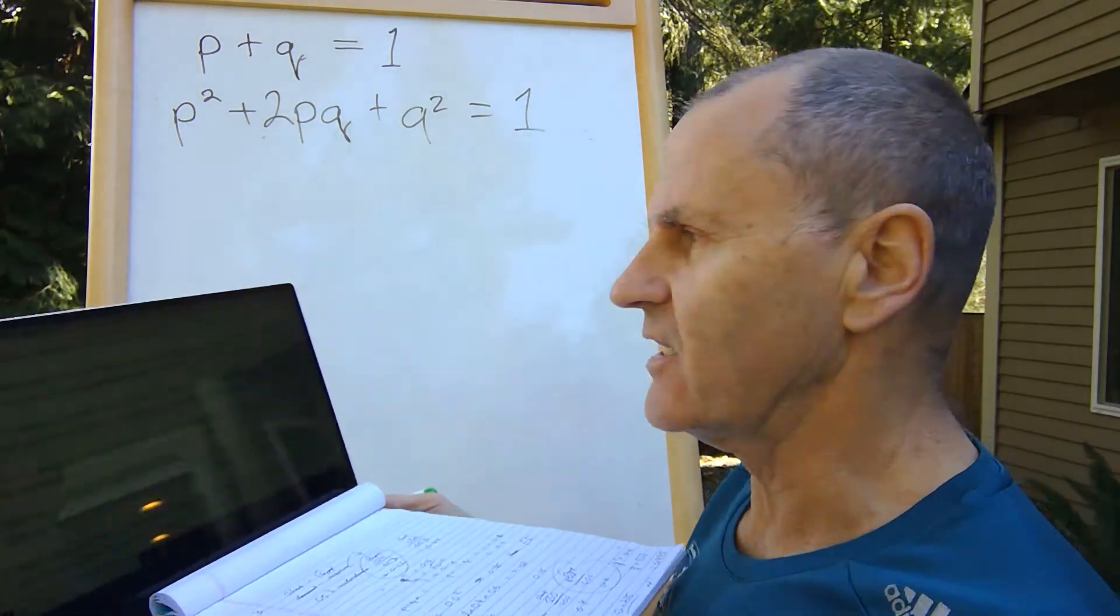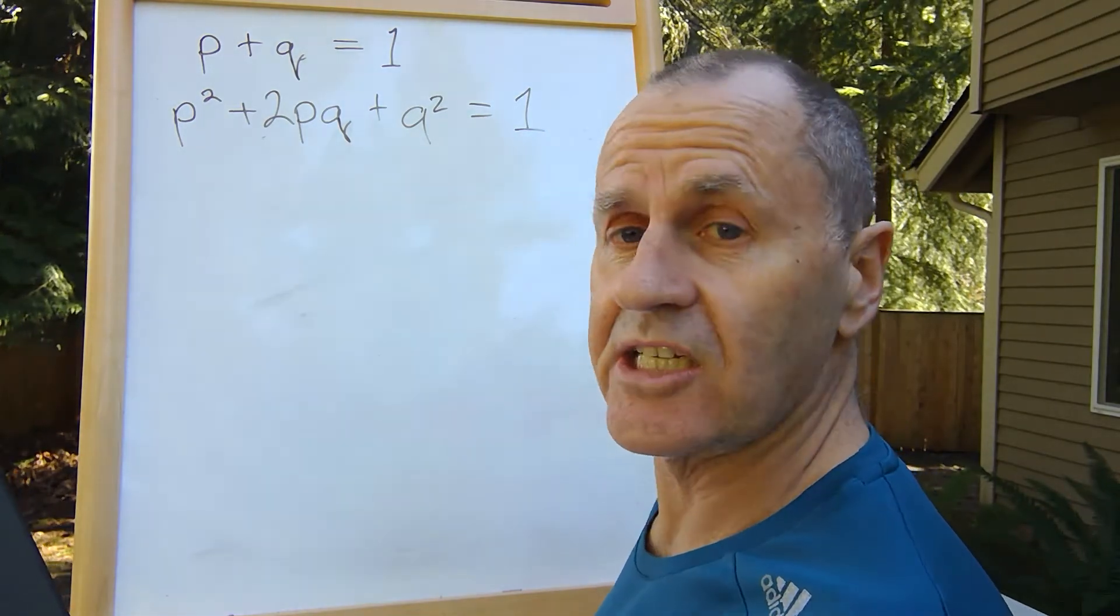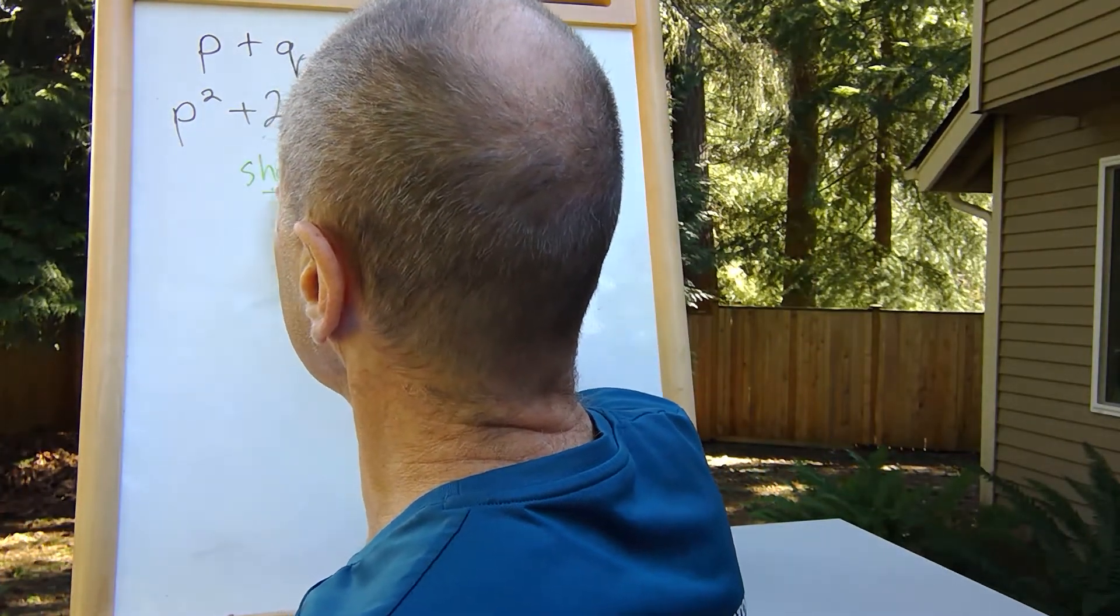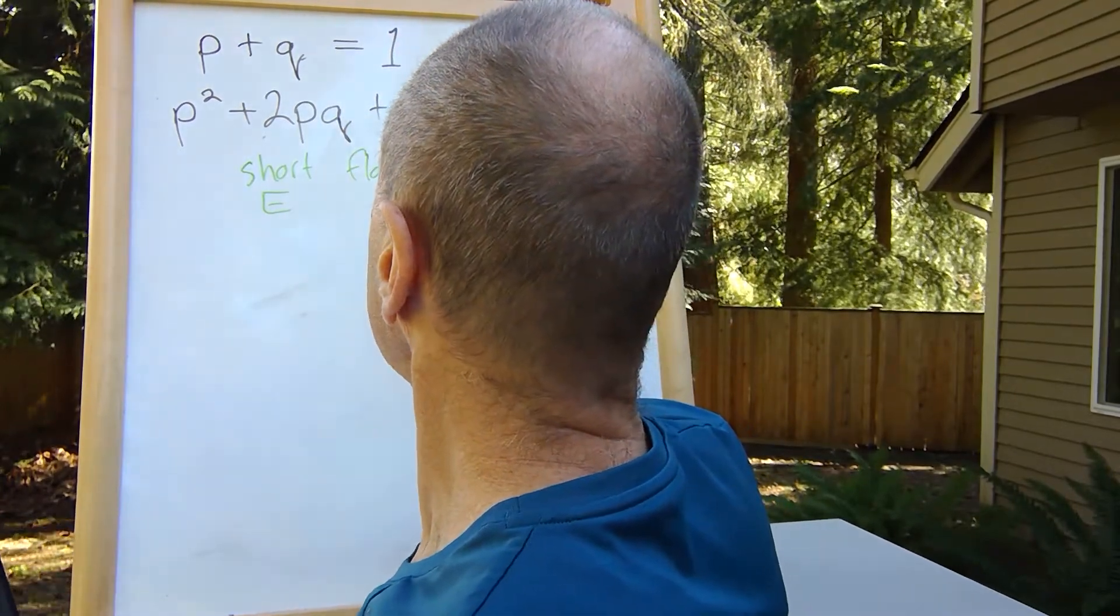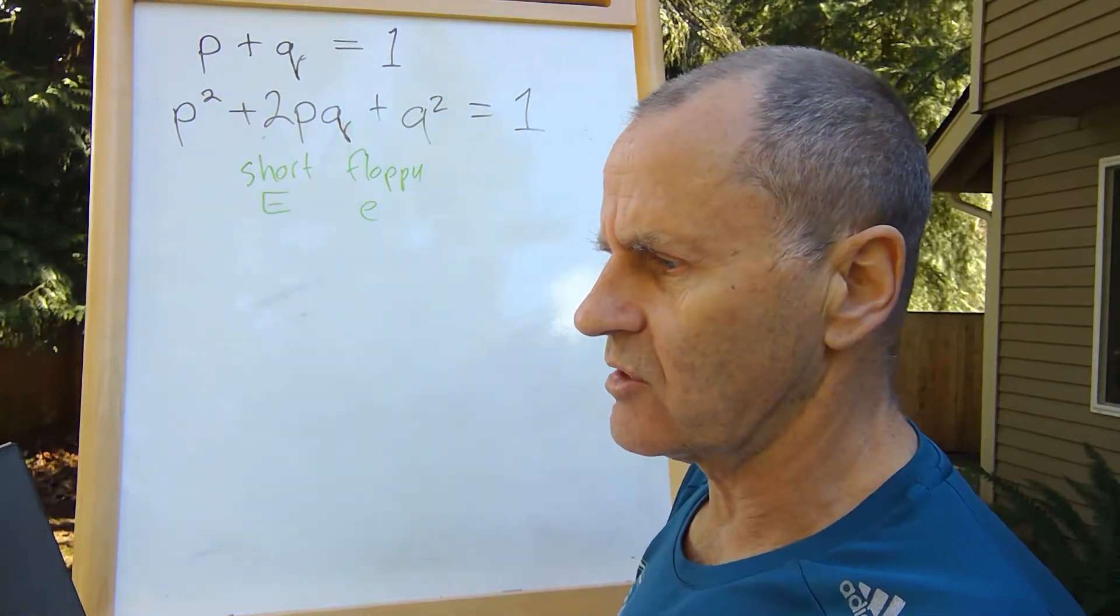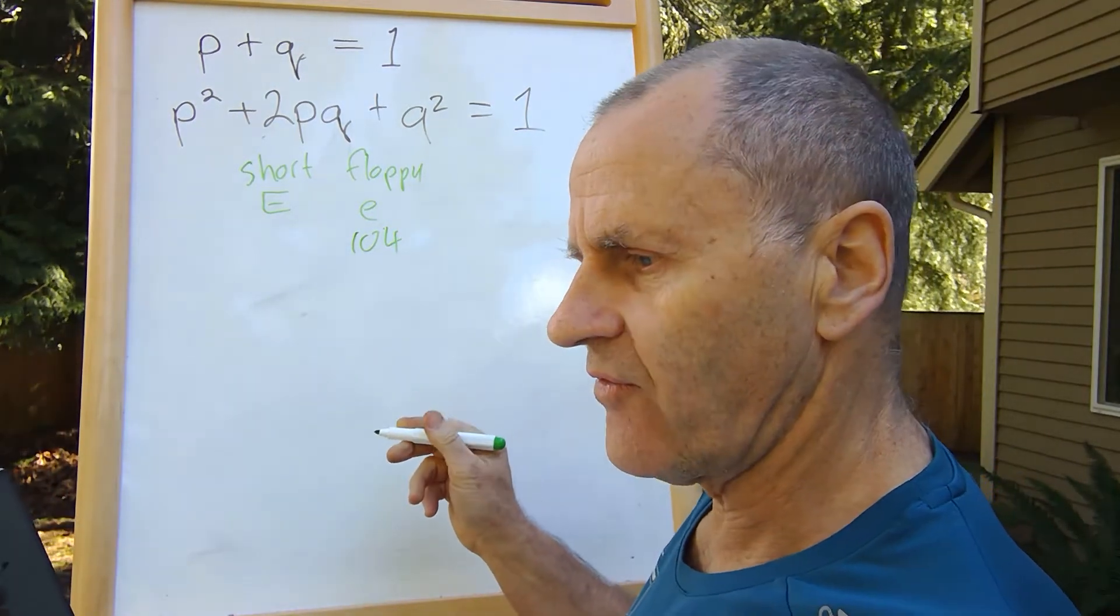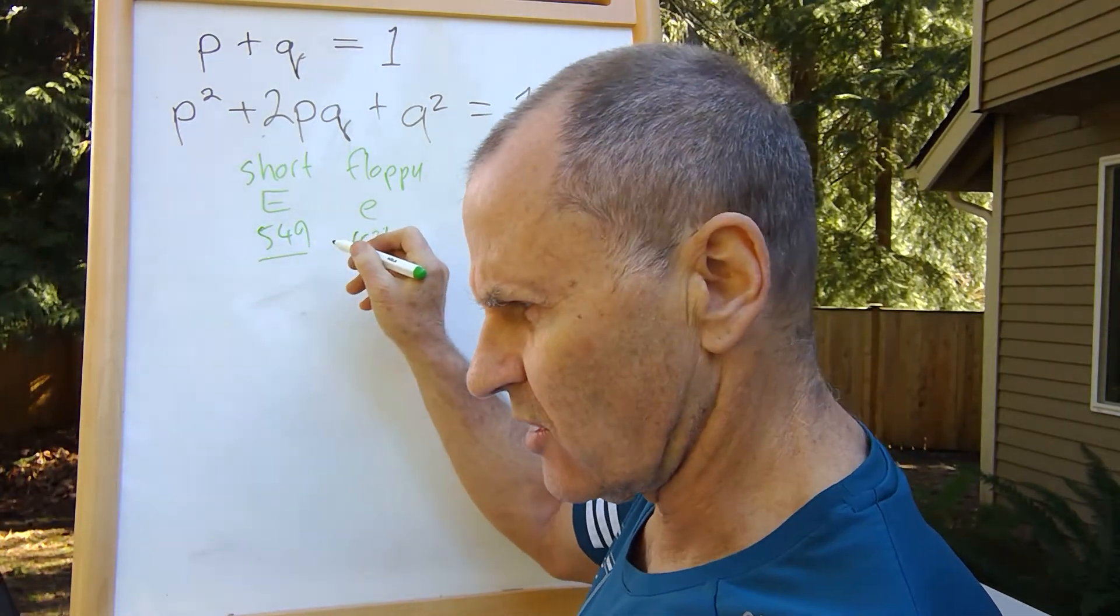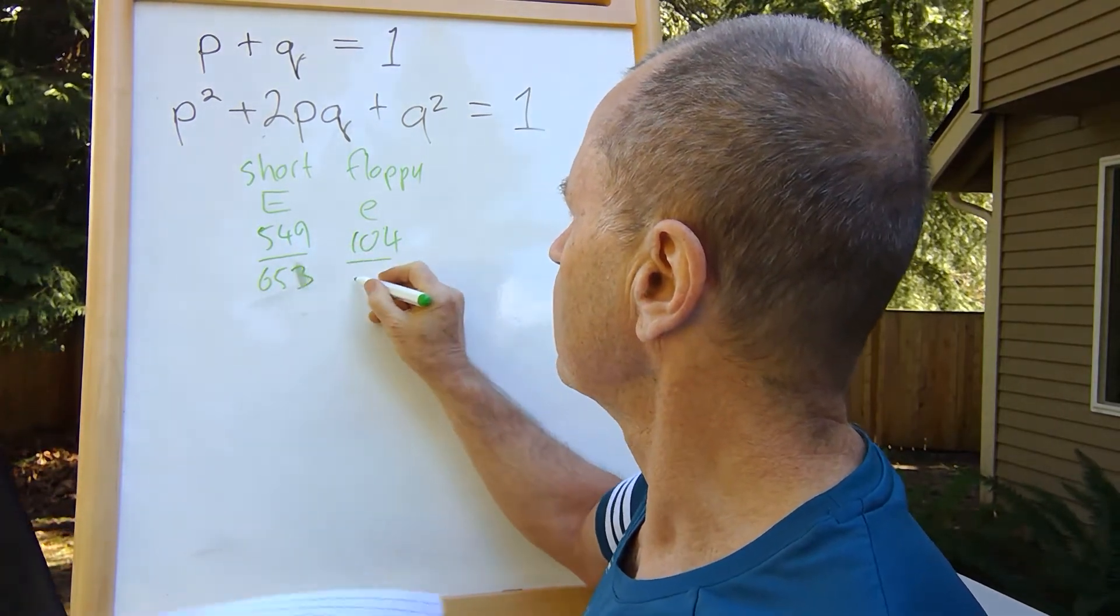So I've got my handy laptop here. Rabbit's ears can be either short or floppy, where short ears are dominant over floppy ears. So short, because that's dominant, we'll call that capital E, and floppy we'll call the recessive small e. There are 653 individuals in a population: 104 rabbits have floppy ears and 549 have short ears, for a total of 653 rabbits.